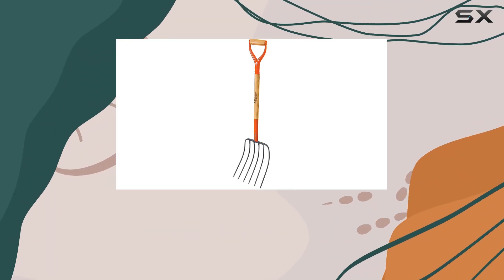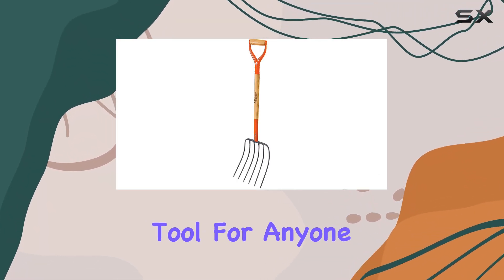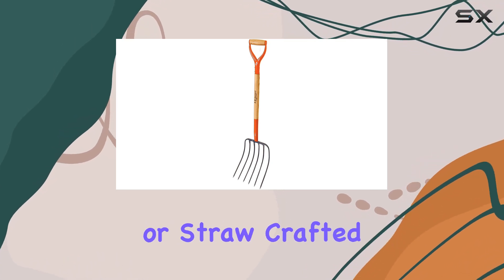The AM Leonard Forge 6-Tine Manure Fork is an exceptional tool for anyone managing compost, manure, bedding, or straw.